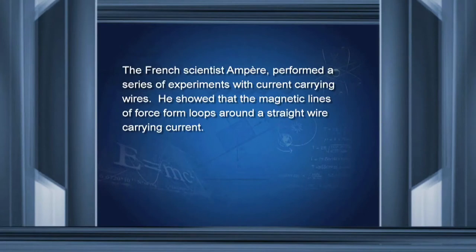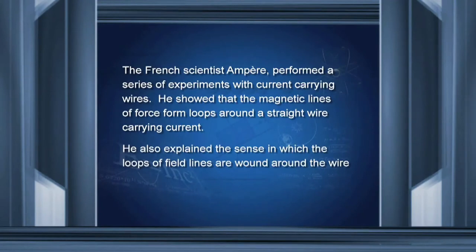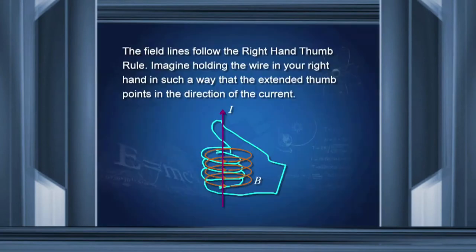Following Oersted, the French scientist Ampere performed a series of experiments with current-carrying wires. He showed that the magnetic lines of force form loops around the wires which carry current. He also explained the sense in which the loops of field lines are wound round the wire. The field lines follow what is known as the right-hand thumb rule: if you take your right hand and stretch your thumb in the direction of the current, the way the fingers are wound gives the direction of the magnetic field lines.